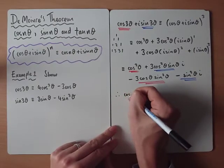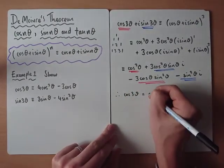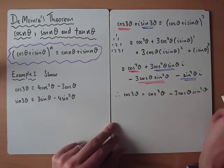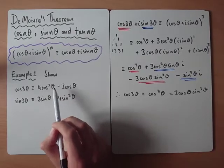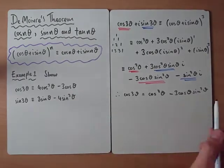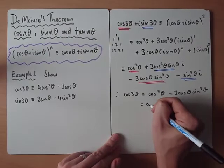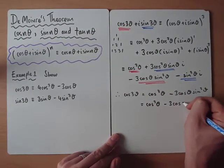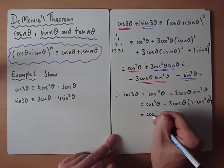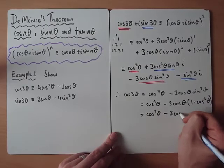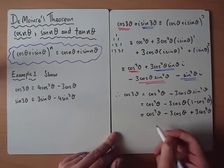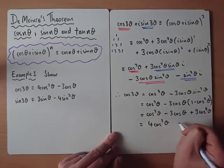Therefore, cos 3θ = cos³θ − 3cosθ sin²θ. If asked to express this in terms of cosθ only, we replace sin²θ with (1 − cos²θ), giving: cos³θ − 3cosθ(1 − cos²θ) = 4cos³θ − 3cosθ.